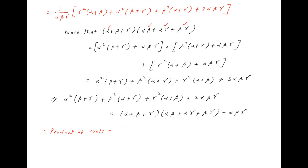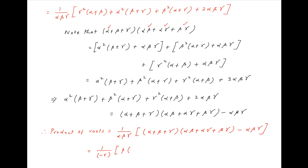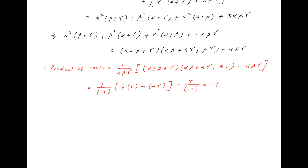Therefore the product of the roots of the desired equation can be written as (1/alpha·beta·gamma)·[(alpha + beta + gamma)·(alpha·beta + alpha·gamma + beta·gamma) - alpha·beta·gamma]. Plugging in the known values: (1/-r)·[p·0 - (-r)] = r/(-r) = -1.